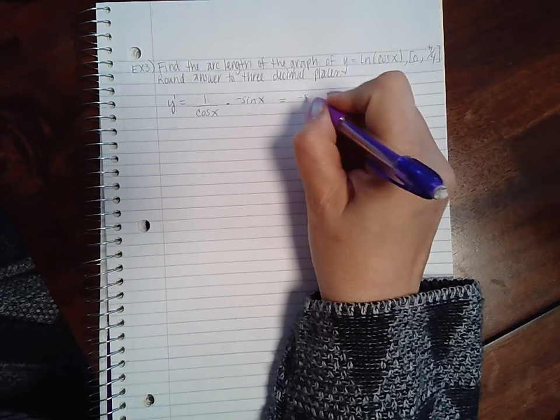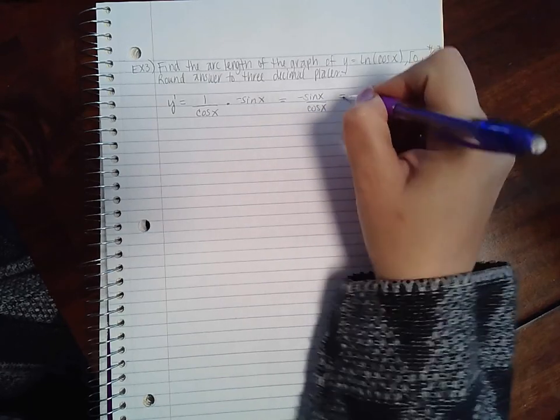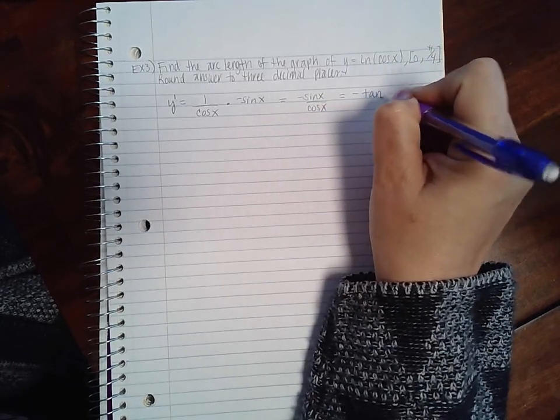So we end up with negative sin(x) over cos(x) which is the same as saying negative tan(x).